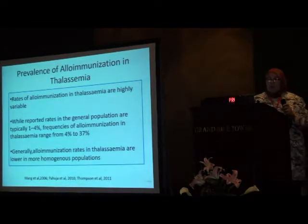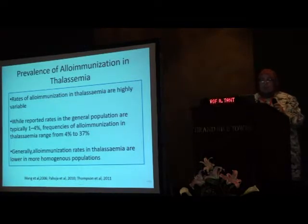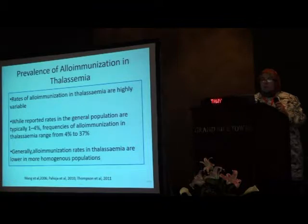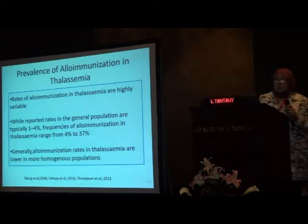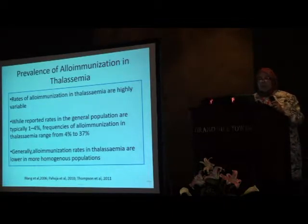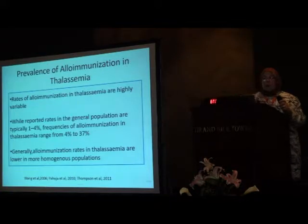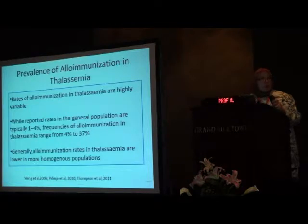Concerning alloimmunization in thalassemia, the described rates are variable, ranging from 4% to 37%. Compare that to the general transfused hospital population, where it doesn't exceed 1% to 4%. Generally, alloimmunization rates in thalassemia are lower in more homogenous populations — lower in Italians, Greeks, and Iranians — because the populations are more homogenous.